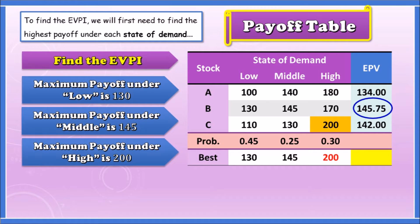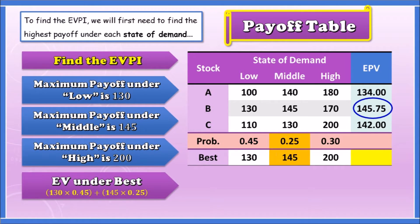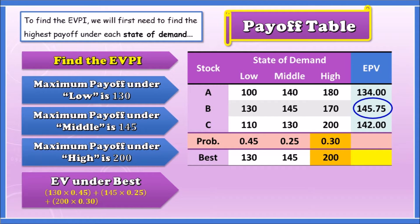Now we calculate the expected value under the best decisions: 130 times 0.45, plus 145 times 0.25, plus 200 times 0.30. This yields 154.75.